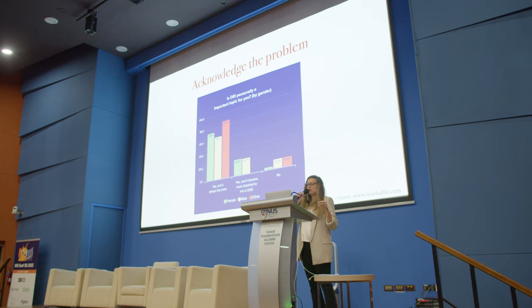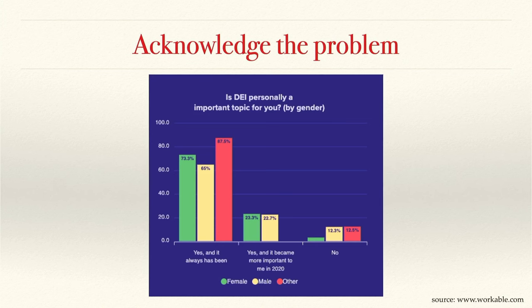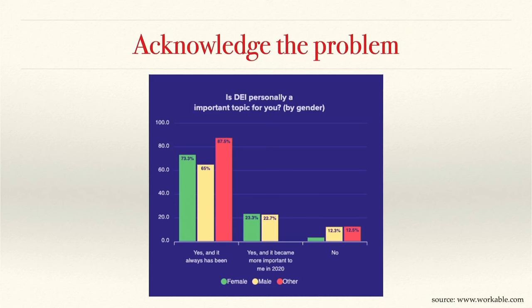So, how close are we really into acknowledging the problem? If you are, for example, a white, straight, well-educated man, how likely is it that you will notice that around you there are mainly white, straight, male engineers? Not very likely. As human beings, we all have the tendency that if the problem doesn't concern us directly, we tend to ignore it or lower its significance. A survey asked employees if DEI is a personally important topic: 65% of men said yes, it has always been an issue, compared to 73.3% for women, and 12.3% said it has never been important. You can see the gender discrepancies in acknowledging the problem.